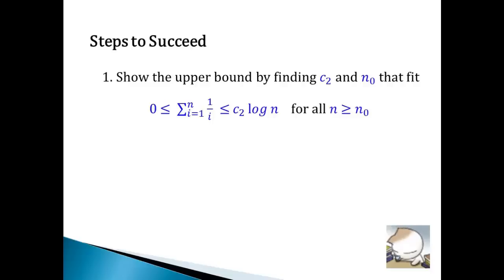First of all, we have to show the upper bound by finding c2 and n0 that the sum of the first n terms is not greater than c2 log n for all n equals or greater than n0.